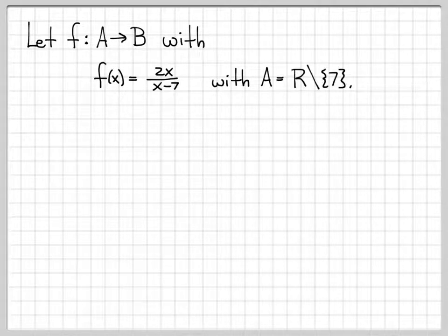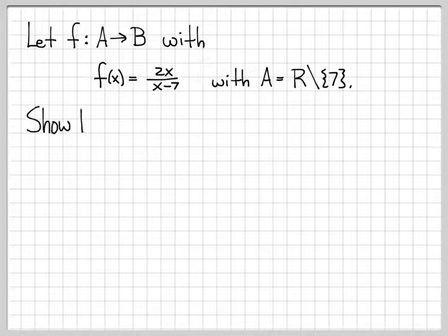The way that we go about proving that is going to be a little bit different. Here's our function f(x), and A is the set of all reals except for the point 7. You can see why 7 is not allowed in the domain of f, because if you plugged in x = 7, on the denominator you'd have 7 minus 7 equals 0, and things would blow up.